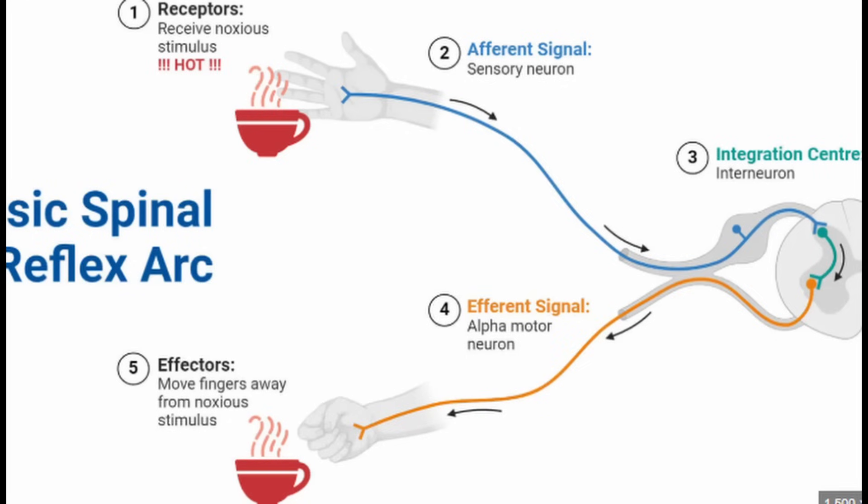Looking through the specification, there's a section on the reflex arc. This is a fairly common question - it's simply listing the steps of how you get from a change in the environment all the way to the response at the end. It's about what nerves do which things within the body as it goes from the stimulus all the way to the effector, and then you get that response taking place.